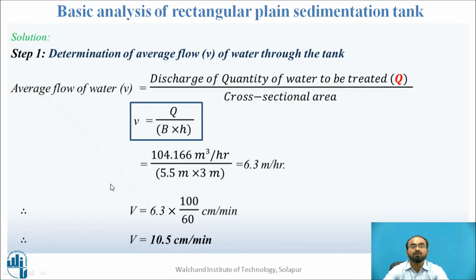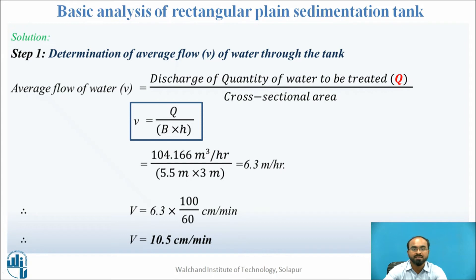First, the average flow rate: small v = Q divided by cross-sectional area = Q / (B × h) = 104.166 / (5.5 × 3) = 6.3 meters per hour. To convert to centimeters per minute, multiply by 100 and divide by 60. This gives the horizontal velocity as 10.5 centimeters per minute.